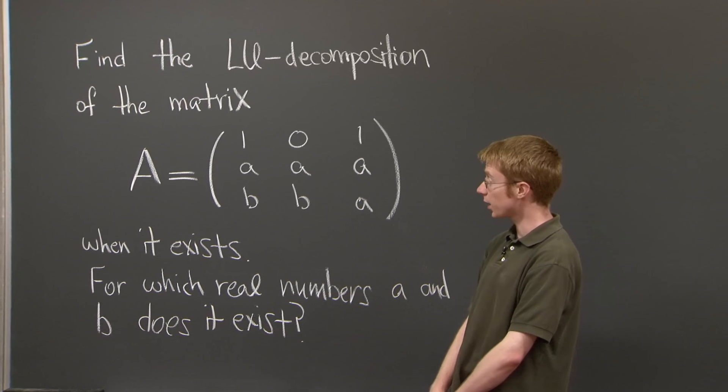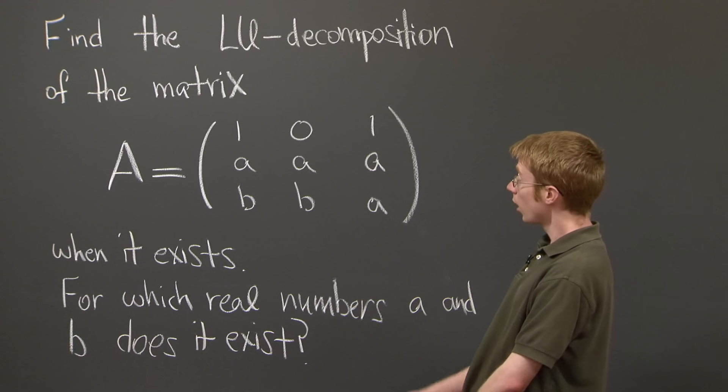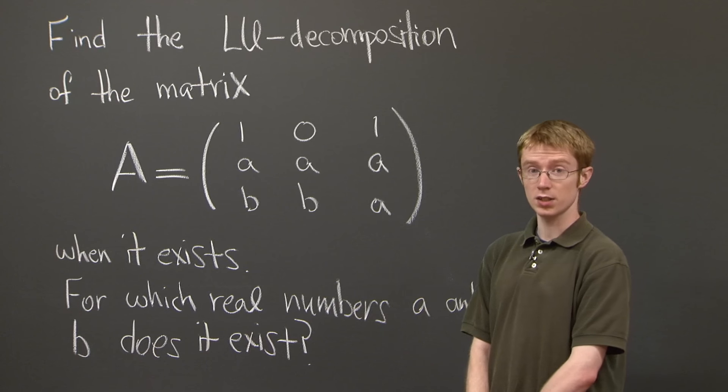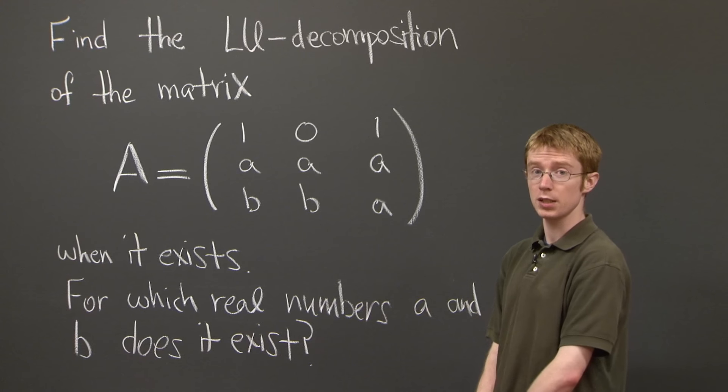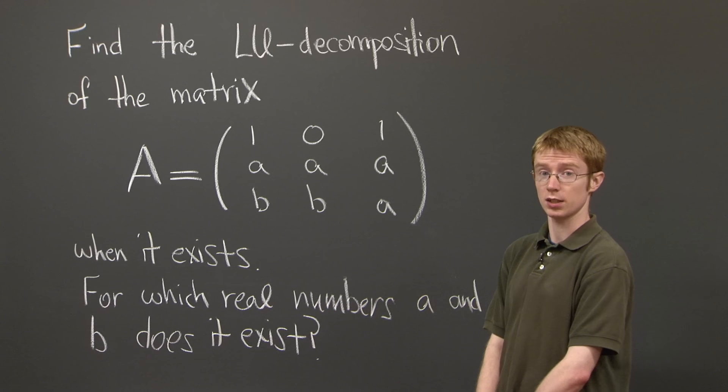Now, notice that this matrix A has variables as well as numbers. The sentence ends when it exists. And the second part of the question asks you, for which real numbers a and b does the LU decomposition of this matrix actually exist?